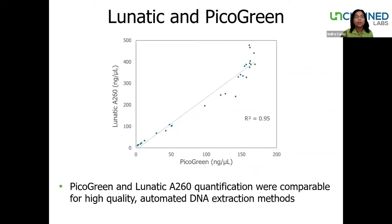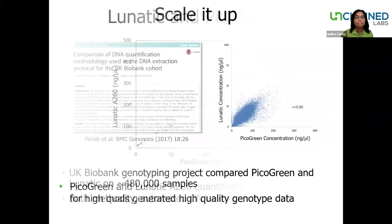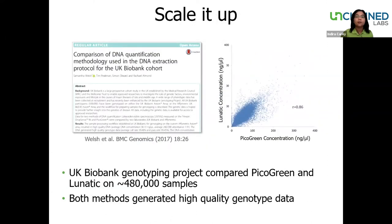Using DNA from high-quality extraction methods generates comparable results between Lunatic and PicoGreen, and we're showcasing that here with results from the UK Biobank cohort. This was a massive genotyping project involving about half a million participants. Results from almost 500,000 samples show strong correlation in readouts using Lunatic compared to PicoGreen. Importantly, there was also no difference in the quality of downstream data.